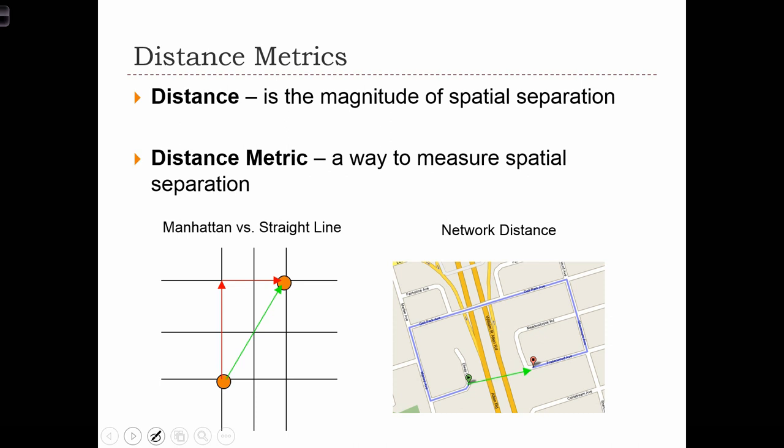We're very used to measuring straight line distance between two points. Straight line distance is referred to as Euclidean distance, because the mathematician Euclid was the first to discover the formula for this kind of distance.